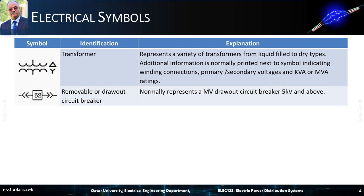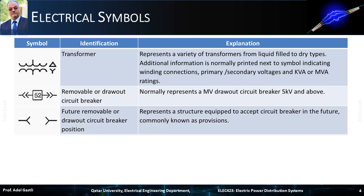The next symbol normally represents a medium voltage draw-out circuit breaker with a rated voltage of 5 kV and above. A draw-out circuit breaker is a circuit breaker and supporting structure designed so the assembly can be moved to either the main circuit connected or disconnected position, without removing connections or mounting supports.